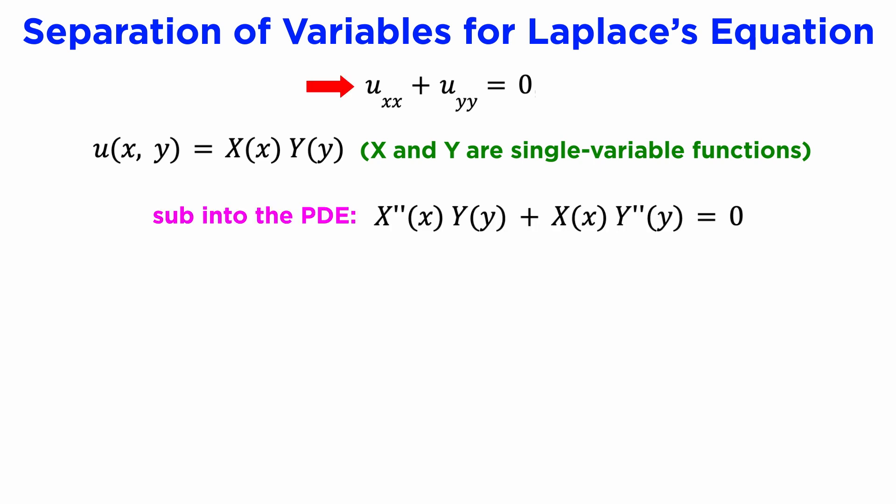When we substitute this into our PDE, uxx plus uyy equals zero, the partial derivatives become ordinary derivatives of our functions x and y.